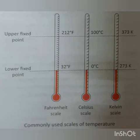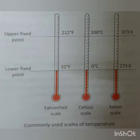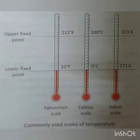Here you can easily see the three scales shown in this picture. In the Celsius scale, 0 degrees Celsius is the lower fixed point and 100 degrees Celsius is the upper fixed point. In the Fahrenheit scale, the lower fixed point is 32°F and the upper fixed point is 212°F. In the Kelvin scale, the lower fixed point is 273 K and the upper fixed point is 373 K.